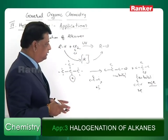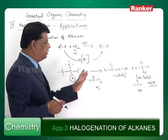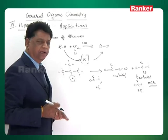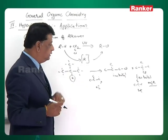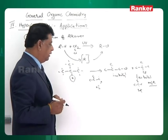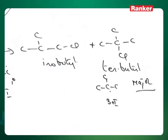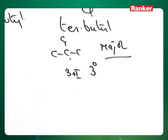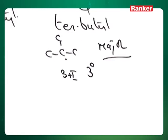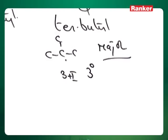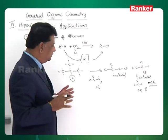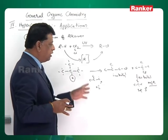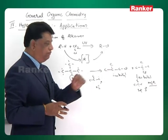Hyperconjugation is not necessary here. Based on the inductive effect alone, one can decide which is the major product, because it is the three-degree free radical. Three-degree free radicals are more stable than one-degree. Therefore, major product identification doesn't require any hyperconjugation help — inductive effect itself is sufficient.